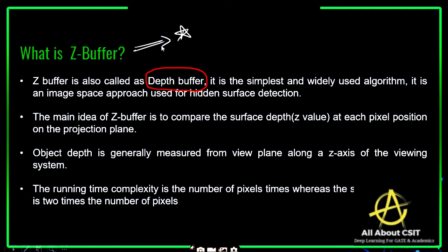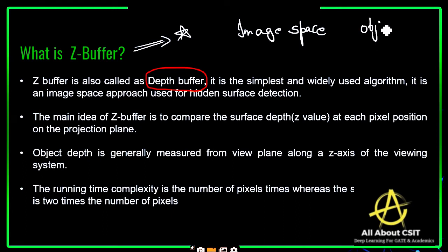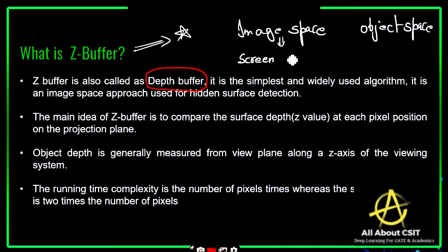It is an image space approach used for hidden surface detection. There are two types of approaches: the image space approach and the object space approach. The image space approach is implemented in the screen coordinate system.